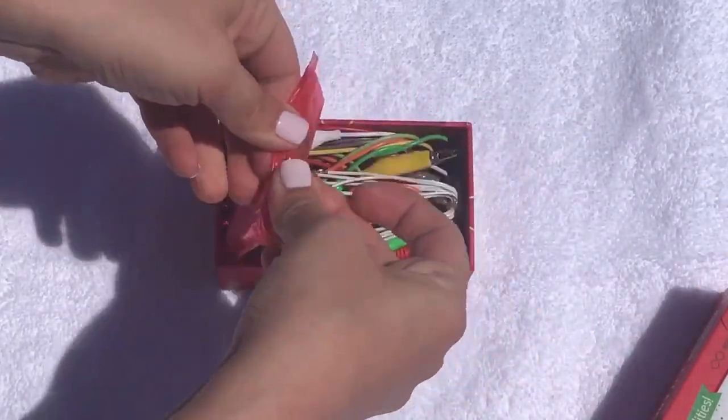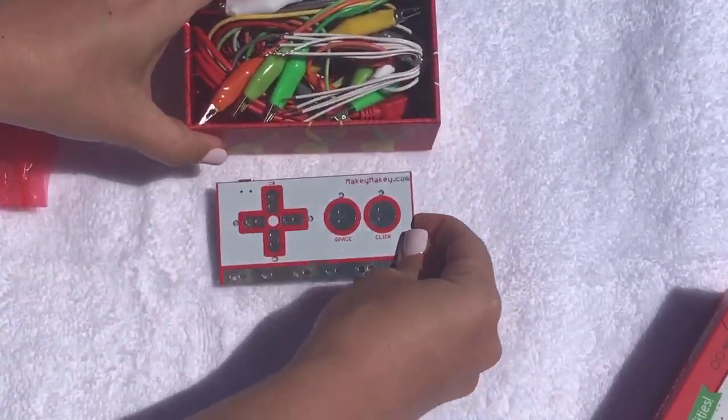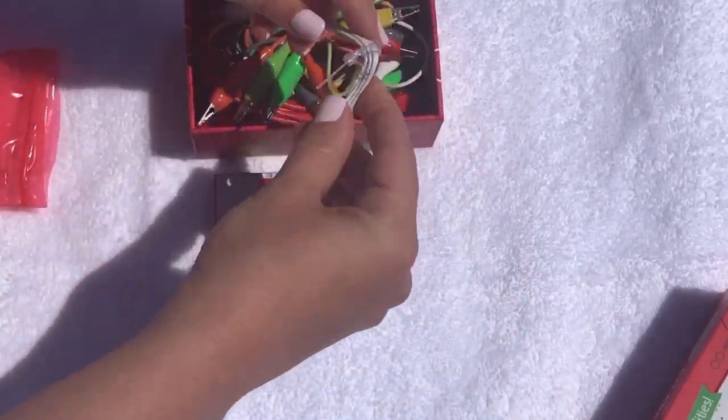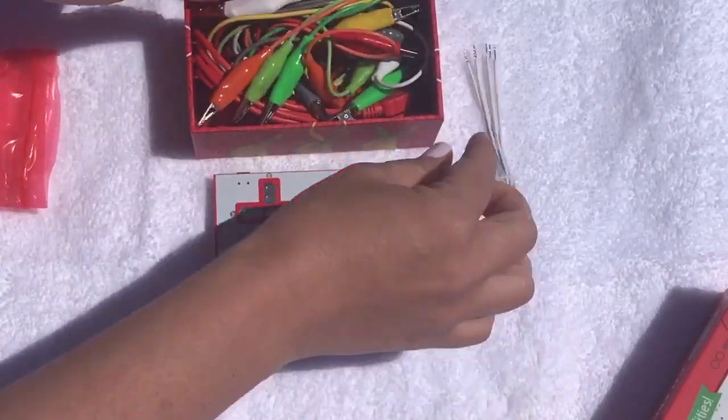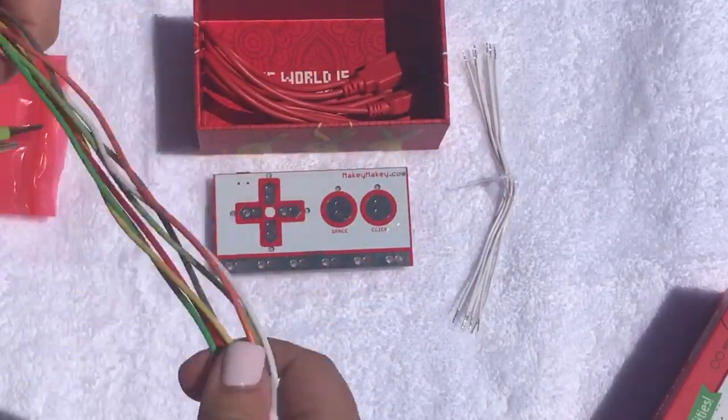The actual Makey Makey keyboard is in a red plastic baggie, and then you will have six connecting wires, a bunch of different alligator clips that like to get nice and tangled.